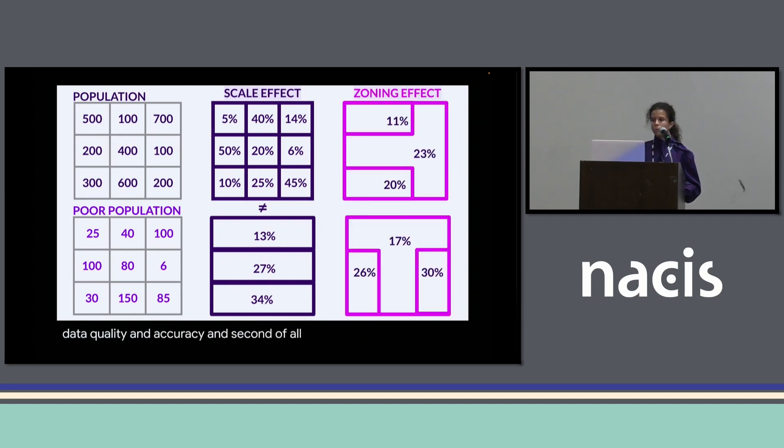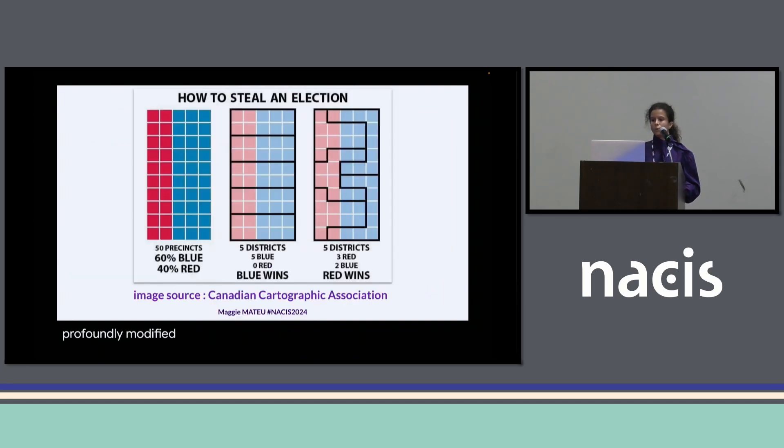Second of all, we also get a zoning effect. Depending on the contours of the spatial units, if they are very heterogeneous, the observed phenomenon is likely to be profoundly modified. You probably already know this image from the Canadian Cartographic Association showing how the way you cut your town or city or country in districts, you can have very different results for an election.